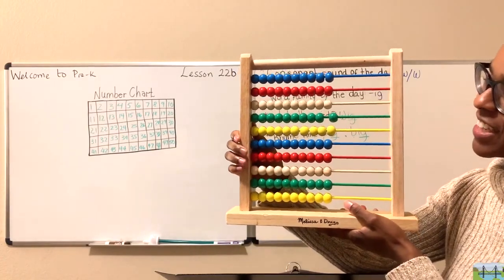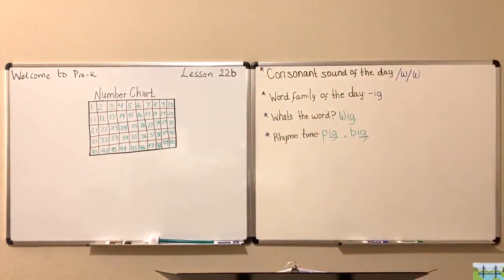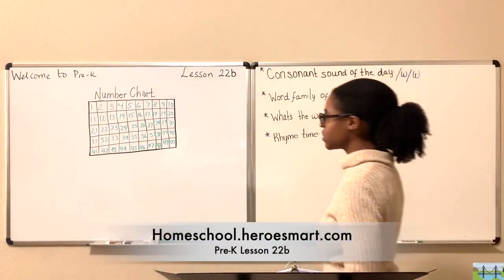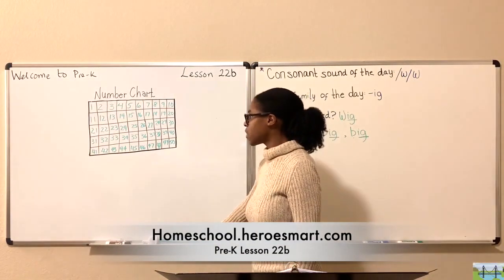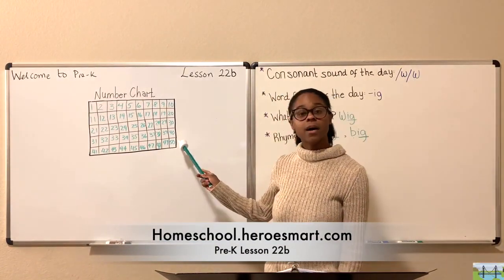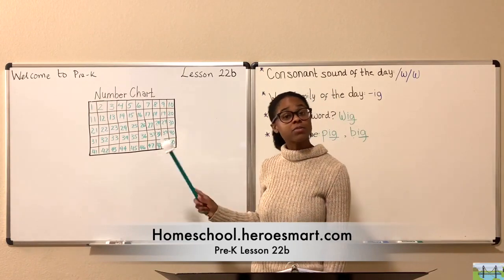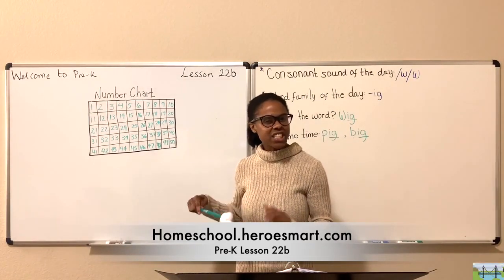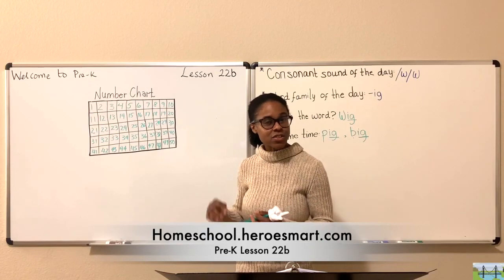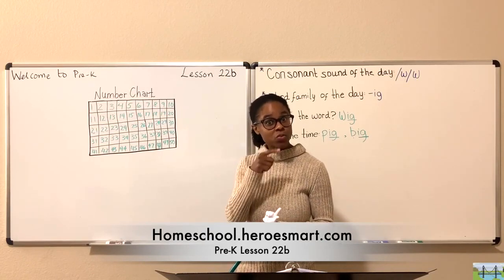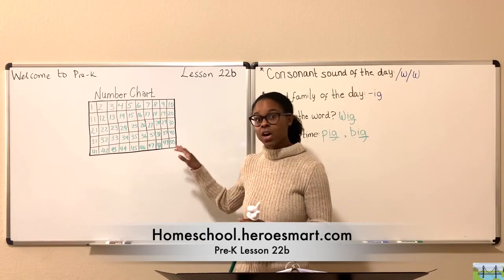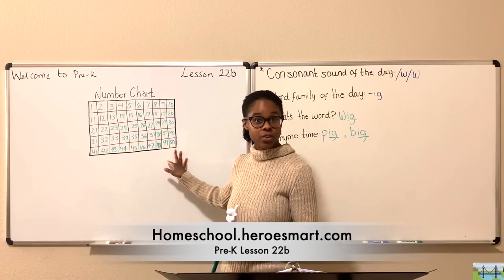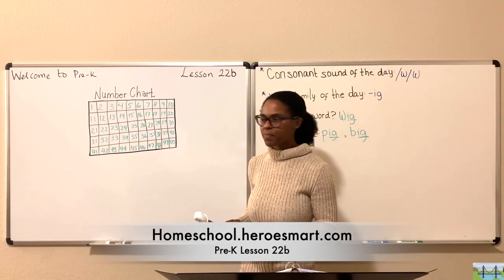Good job, way to go, great work. So we just counted backwards from 50 using the abacus. Now we're going to count backwards from 50 again, but this time we're going to look at the numerals so that we can continue to make an association between the numbers we speak and the actual numerals — what they look like when you write them.